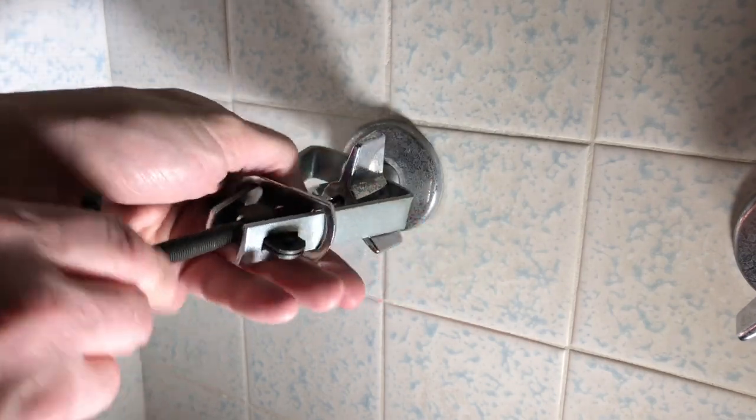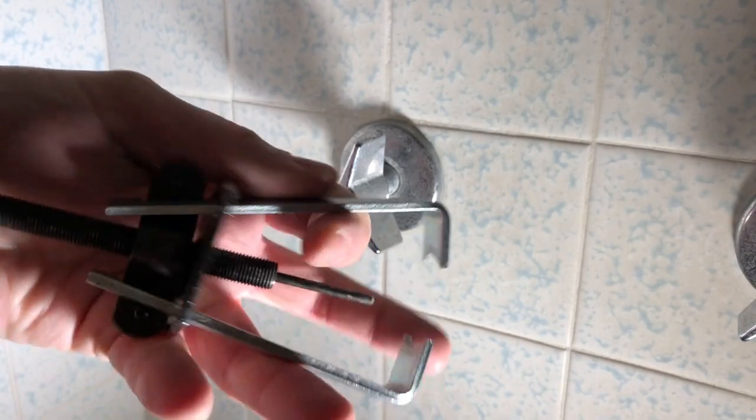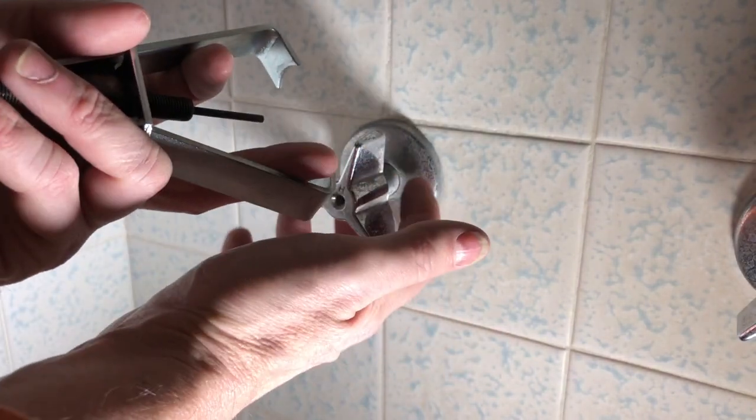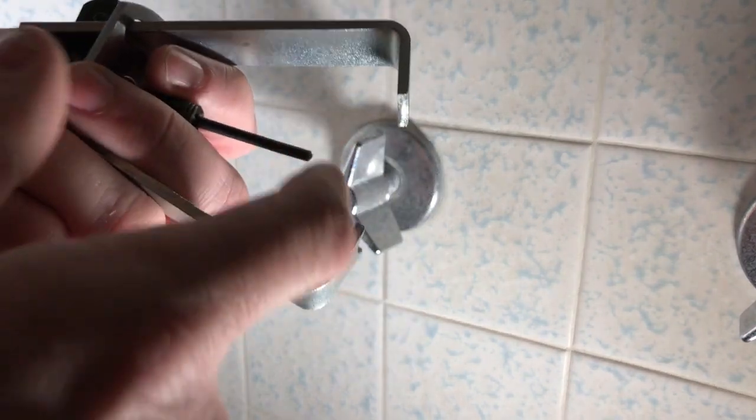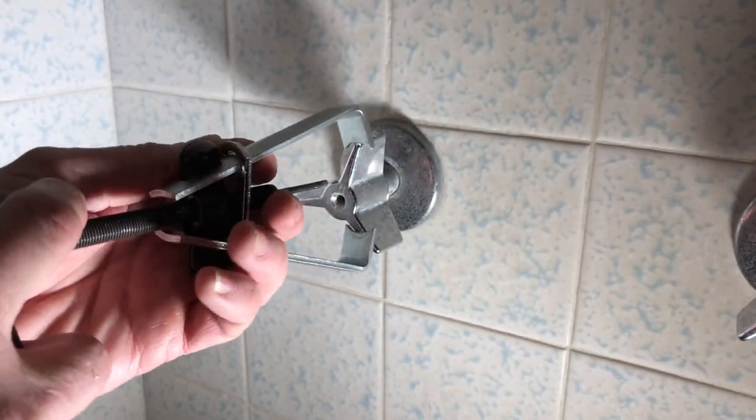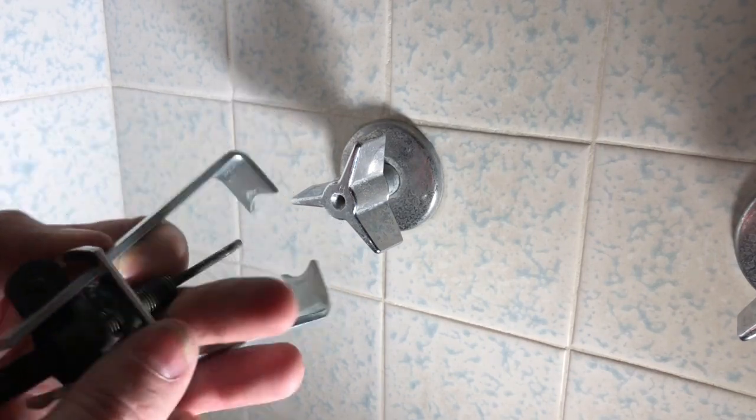And to use this, these two jaws, they clamp on the handle, on the underneath of the handle. And then this part goes right in the center, right where you took the screw out of.